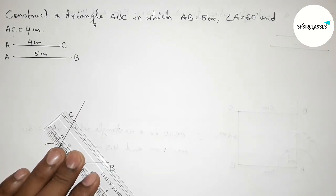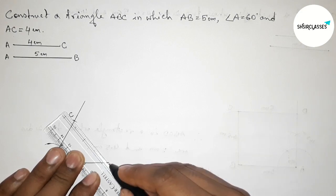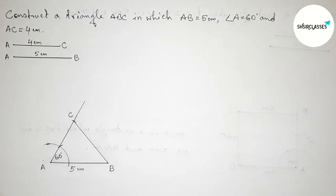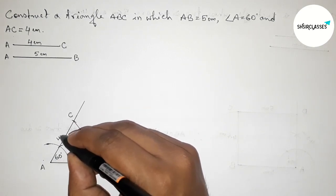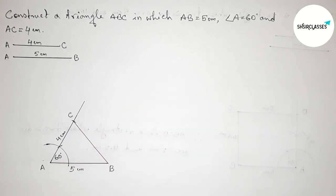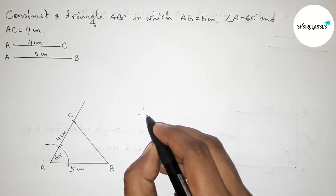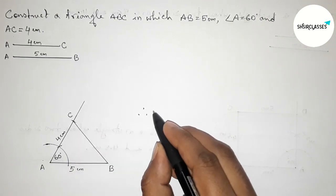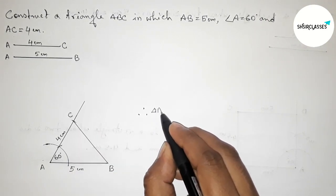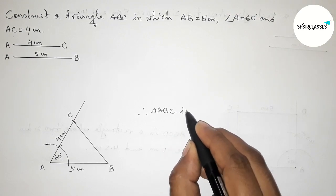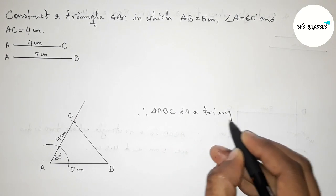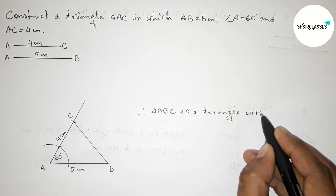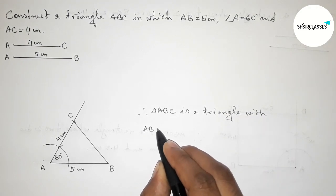Joining side BC to get triangle ABC. So AC equals to 4 centimeter. Therefore, triangle ABC is constructed with side AB equals to 5 centimeter, angle A equals to 60 degree, and AC equals to 4 centimeter.